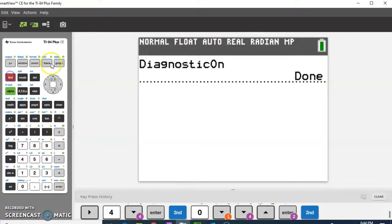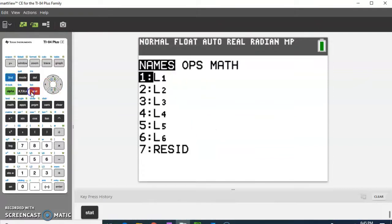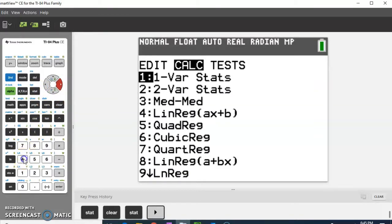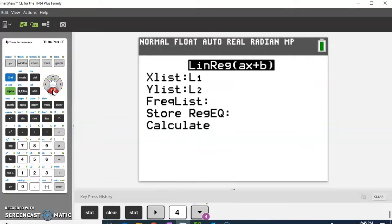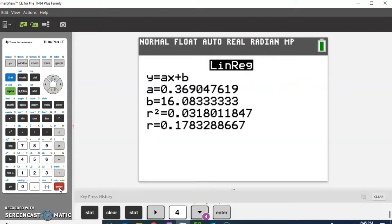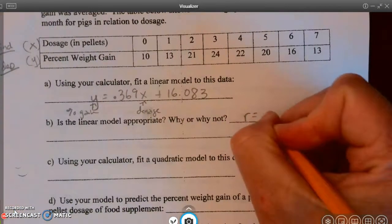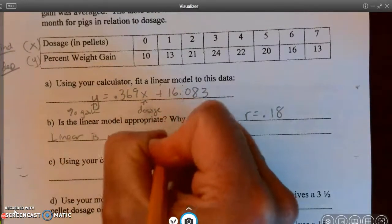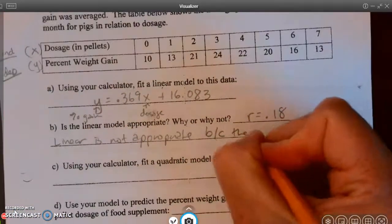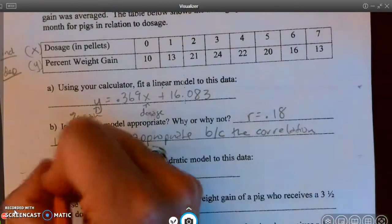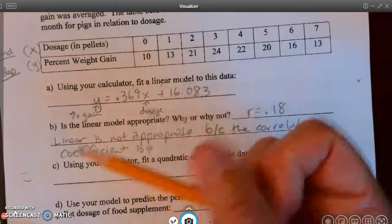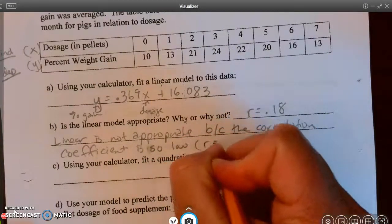now I can go back, and I can pull up my stack, and I'm going to go to linear regression again. I'll go down to calculate, and when I enter, now I have an R value. 0.18 is what that R value would be. So my correlation coefficient is 0.18, so a linear model is not appropriate because the correlation coefficient is so low. And then I'm going to go ahead and say what the correlation coefficient is. It's 0.18.